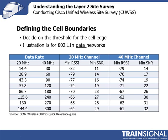This chart looks at the recommendations from Cisco if you're deploying an 802.11 network for data only — not for voice or location-based services. You want to be looking at your received signal strength, and bear in mind that it will actually fluctuate. So look at not just the minimum received signal strength, but the average. This table provides the minimum RSSI and the minimum signal-to-noise ratio for a 20 MHz channel and also for a 40 MHz channel, and that varies by data rate. The higher the data rate, the higher the received signal strength must be in order to recover your 1s and 0s.